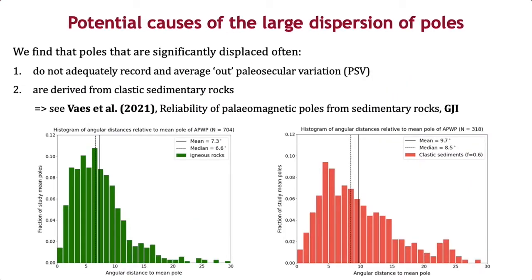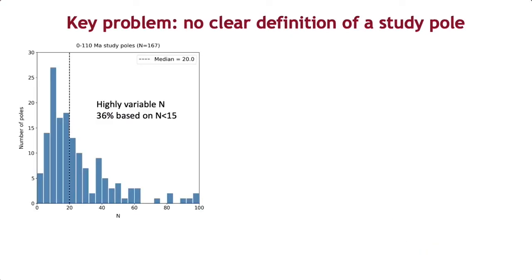We have analyzed some of the potential causes of this problem, and we find that poles that are significantly displaced often do not adequately record and average out paleosecular variation, or are derived from classic sedimentary rocks. As you can see in these figures, sediment-based poles are much more dispersed compared to poles derived from igneous rocks.